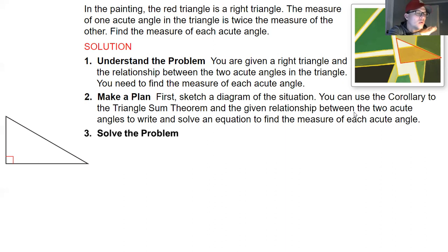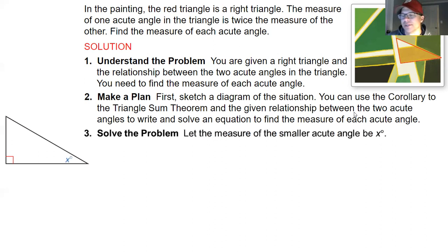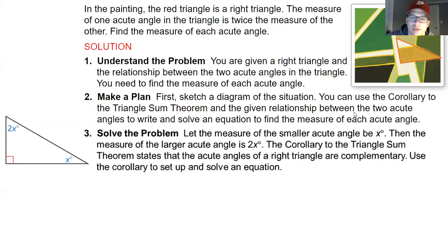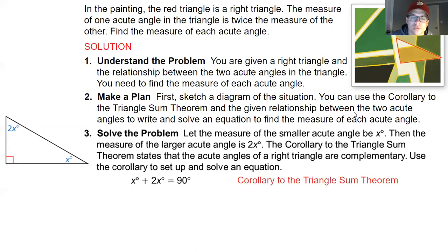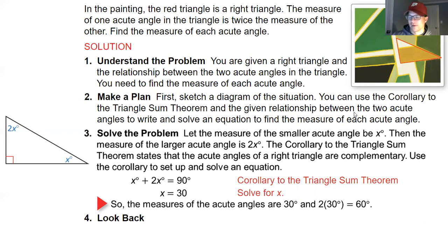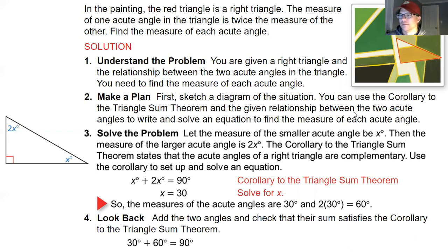Drawing the diagram, the lower right corner is 90 degrees and the other two add to 90. We set one equal to x and the other to 2x. By the corollary, x + 2x = 90, giving 3x = 90, so x = 30. Plugging back in: 2x = 60. Checking: 90 + 30 + 60 = 180, which confirms the triangle angle sum theorem.